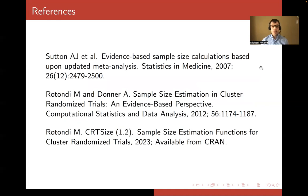Now, the key reference for this work is Rotondi and Donner 2012. And in this manuscript, there are additional details on the use of different distributional assumptions for the ICC. So, in there, we discuss the truncated normal version, the uniform approach, and so on. And it also includes a couple of other worked examples.